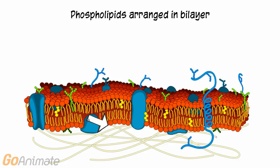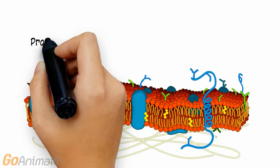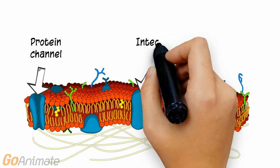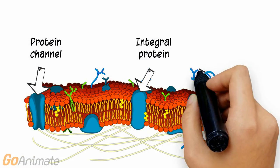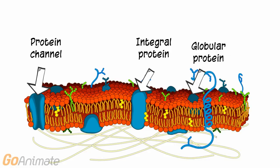The phospholipids are arranged in a bilayer. The cell membrane contains various proteins. There are protein channels that allow certain substances in or out of the cell, integral proteins that extend all the way through the cell membrane, and globular proteins.